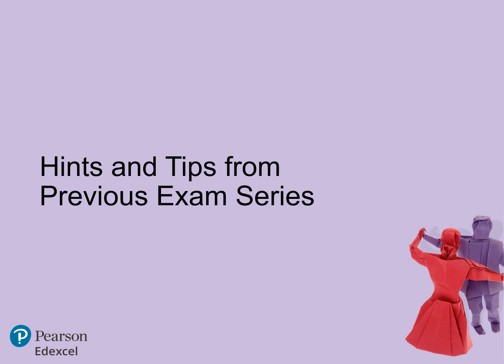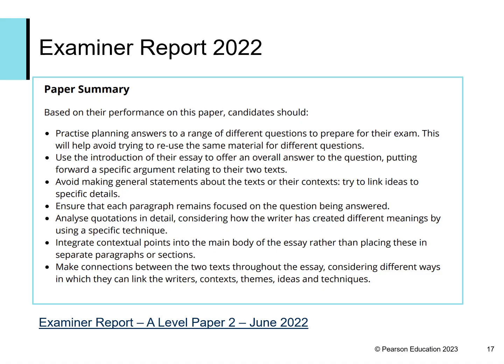Now we have looked at what is assessed in the exam questions, let's move on to some feedback from the examiners from previous exam series. This was taken from the end of the examiner report for A-Level Paper 2 from 2022. The principal examiner sums up feedback about the whole paper and offers advice for candidates, including helpful guidance around each of the assessment objectives. It is worth downloading and reading the summer 2022 examiner report in full, as there are many other useful pieces of feedback. There are examiner reports for all series on the website.